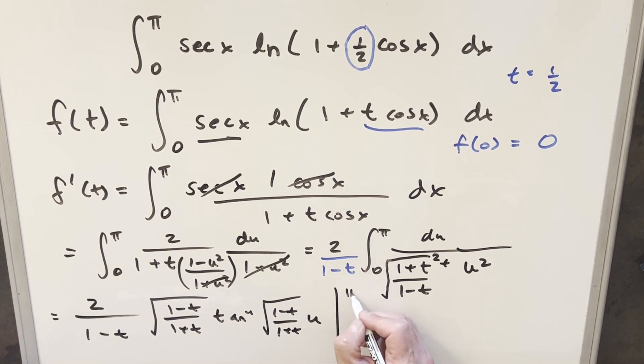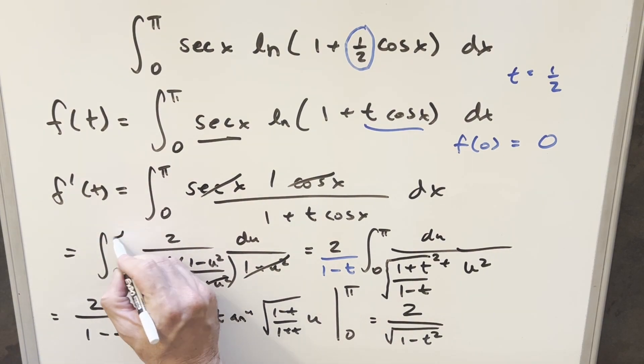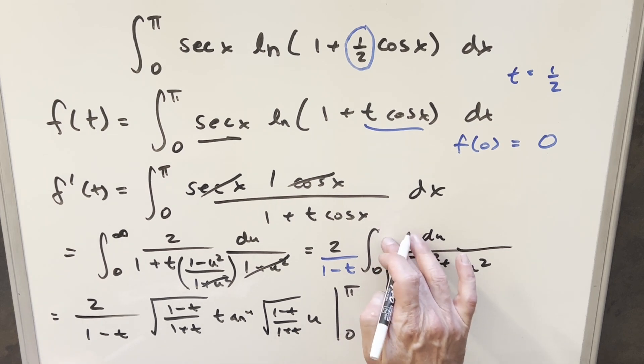We need to evaluate from zero to pi. Now this first part here, when you simplify all this stuff, what's going to happen is this is going to become two over square root of one minus t squared. Then we just need to evaluate at zero on pi. And of course, what I'm realizing is when we did the Weierstrass, I needed to update our bounds. This was actually going to change to infinity.